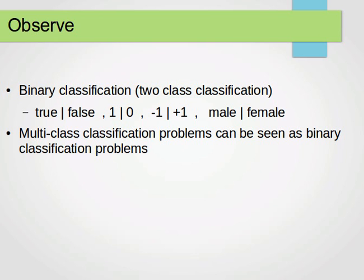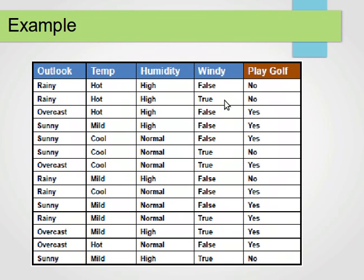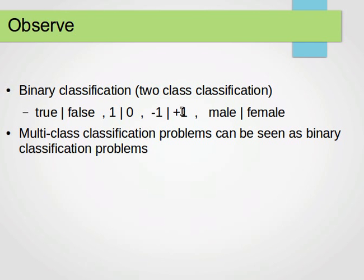If you remember the weather dataset — do we play or not play? We have these attributes or features or characteristics, sometimes called predictors, and we have the class or the target value. Here we have yes or no, play or not play. So this is a binary classification problem — for binary classifications, we have two classes.